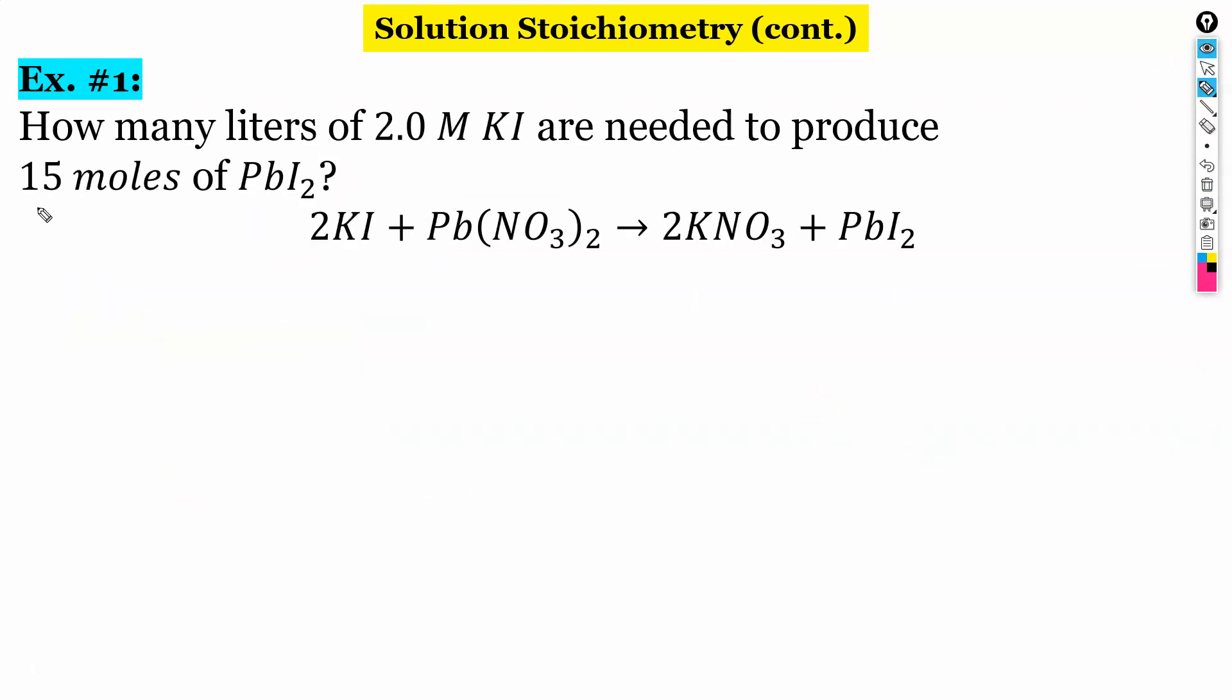All right. In this example, it says, How many liters of two-molar potassium iodide are needed to produce 15 moles of lead iodide? So we're going to be going from moles to liters. So the first thing we need to do is we need to convert our moles of lead iodide to moles of potassium iodide. So let's do that.